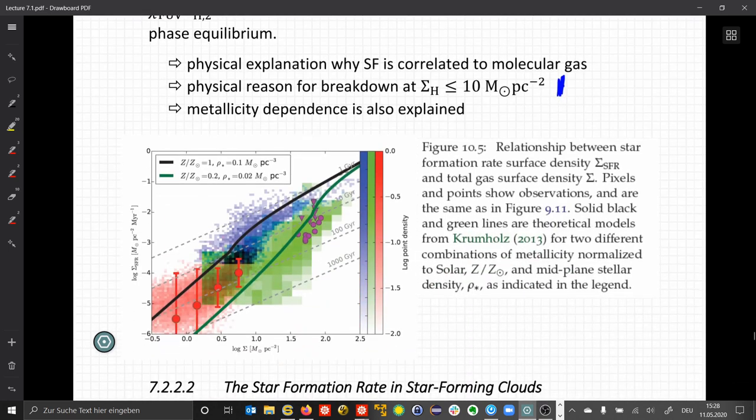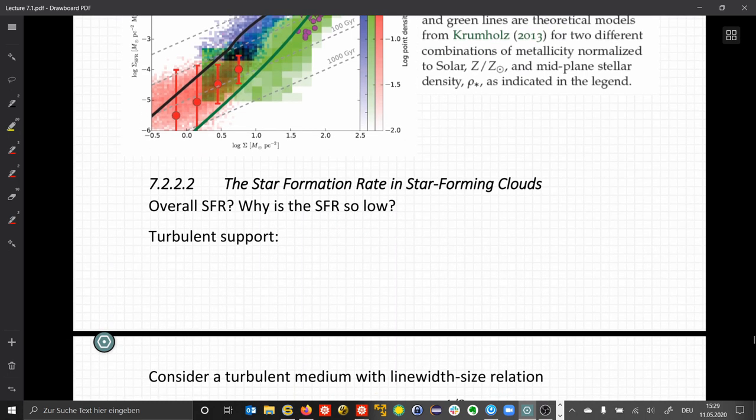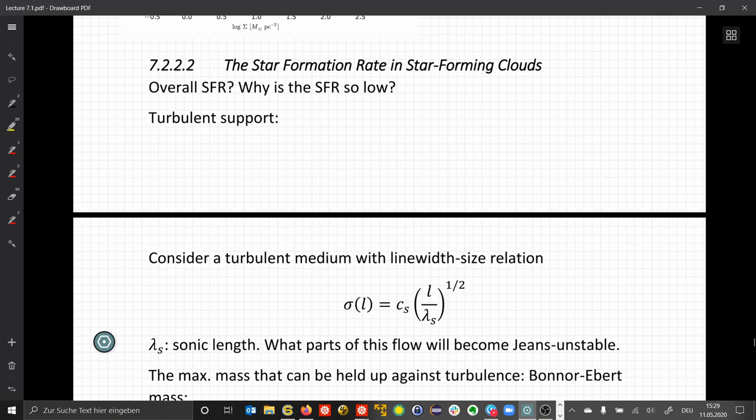So here in this relationship, we plot the star formation rate again against the total gas surface densities. And these are two different theoretical lines here in black and in green for different metallicities. So one is solar, 0.2 is very subsolar. And we see how this differs then in terms of the star formation rate. When we look at the overall star formation rate, does this explain why we observe a pretty low star formation rate?